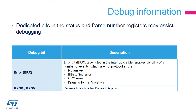Within the USB device controller, the dedicated ERR status bit provides some debug functionality in a USB application in relation to various events. The events that can trigger this debug bit are listed in this table.